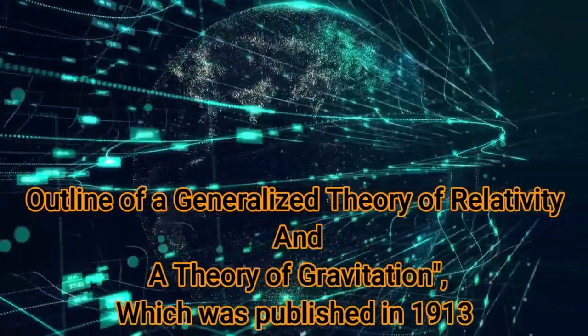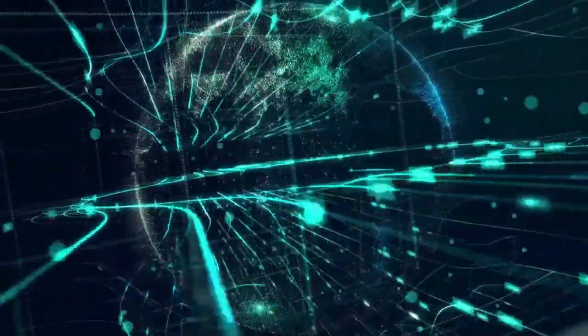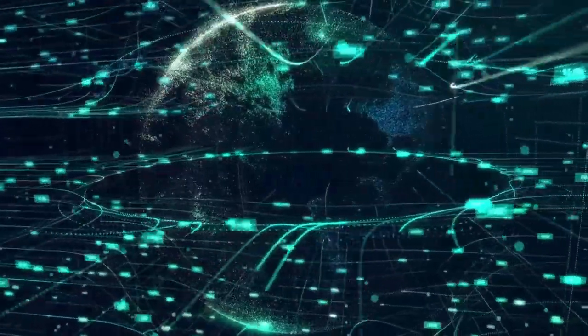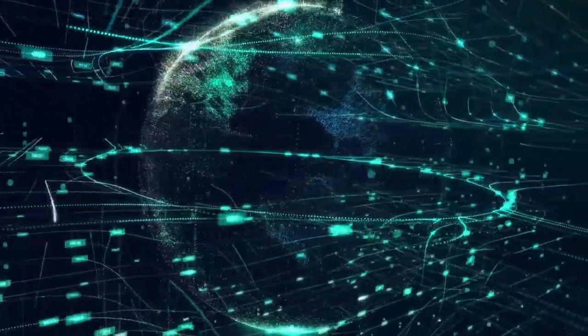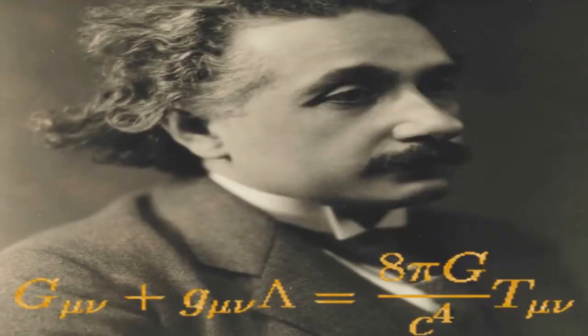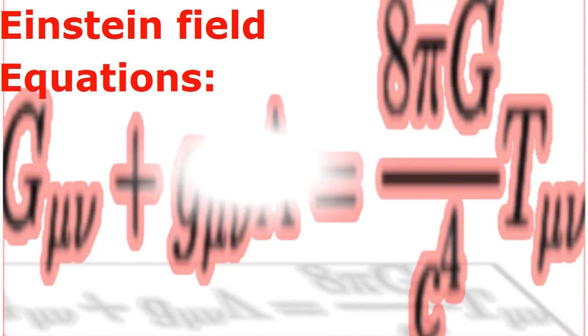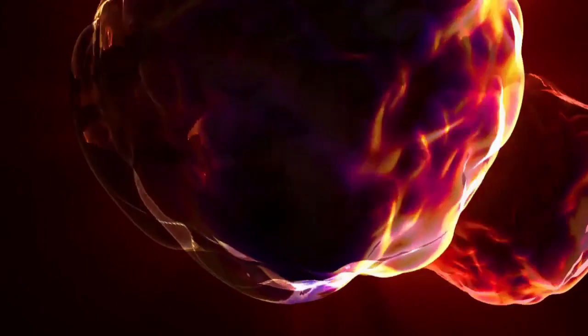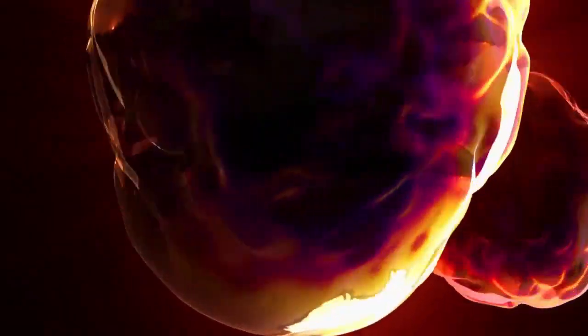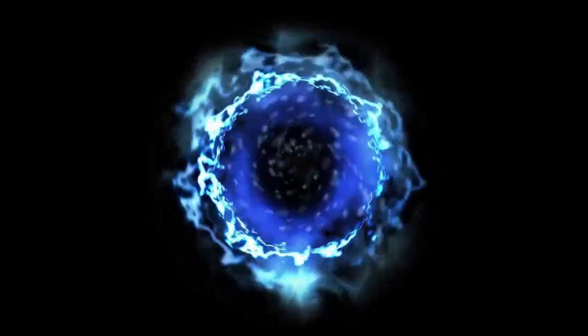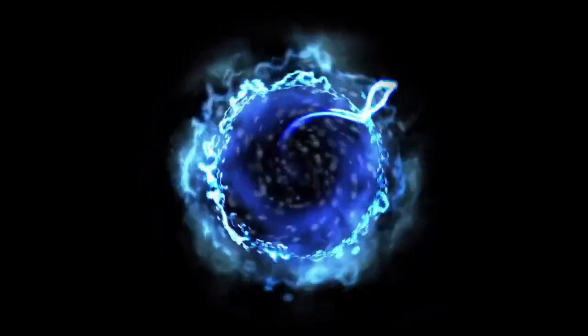But that was not the final Einstein field equation. On November 25, 1915, Einstein presented to the Prussian Academy of Sciences what we today call the Einstein field equations, the new law of gravity that superseded Isaac Newton's inverse square law of gravity. Einstein took the lesson from special relativity that mass and energy are equivalent as one of his starting points, or rather the idea that both mass and energy have to produce gravitational fields.